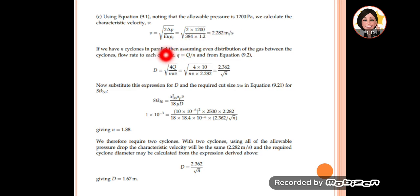We substitute it into the flow rate equation. Here Q equals the total flow rate divided by the number of cyclones. So we can identify D in terms of N. Now we substitute the expression of D and the required cut size X50 into equation 9.21, the Stokes equation.